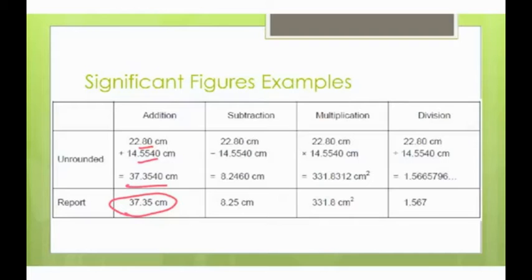Same thing as if we are subtracting. 2 decimal places, 4 decimal places. Since 2 is the lowest number, 2 decimal places is what we report to. Notice in the second example, the second decimal place was a 4. However, since the 6 was there, it's larger than 5, it would round the second decimal place up to a 5.